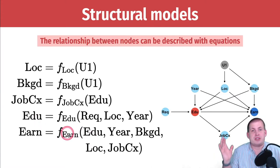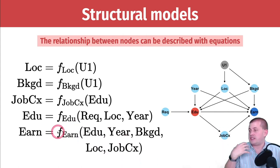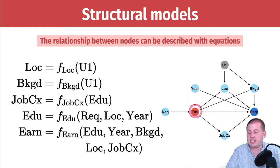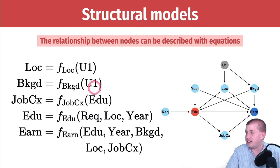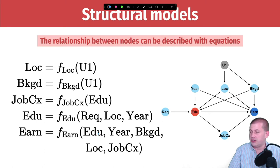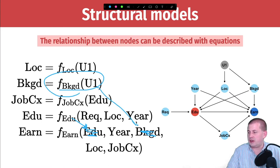And then finally earnings — we have another function that takes a whole bunch of arguments and spits out earnings. These functions don't have to exist in real life; we don't have to create regression models for each one. This is just conceptually what's happening in the graph. The reason this is nested is that the earnings function takes education as input, but education itself is based on another function. So we could replace education with its function, replace background with its function, replace job connections with its function — we're just feeding it a whole bunch of nested things, and it can get really complex.